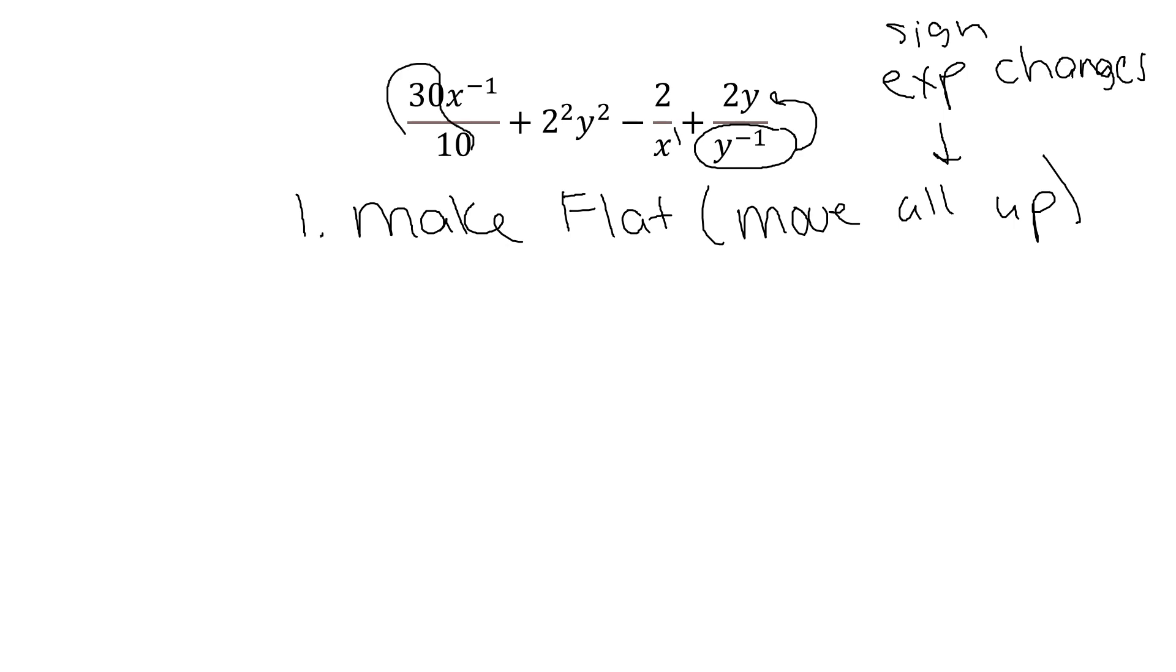3 over 10 simplifies. 2 to the 2nd power simplifies. And then we're going to pick everything that's on the bottom of our fractions and move it up. So when I do that, this is what I get. Let's walk through this. 30 over 10 becomes 3, and that x^-1 is already on the top of a fraction.